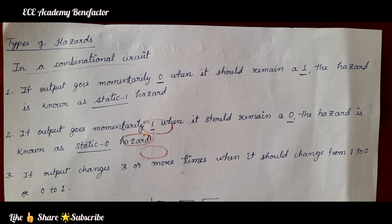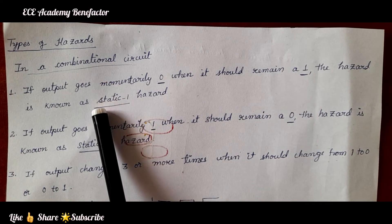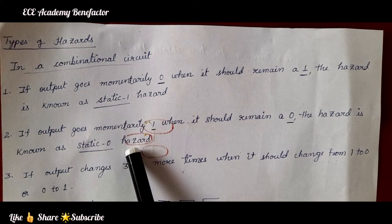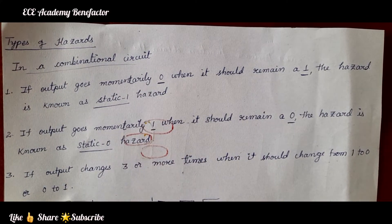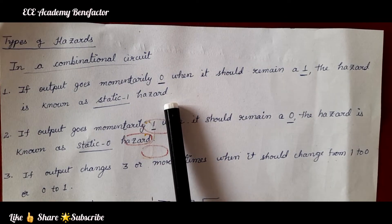Now, in this class let us see what are the different types of hazards. In a combinational circuit we are having static 1 hazard, static 0 hazard and dynamic hazard. So, what is static 1 hazard?